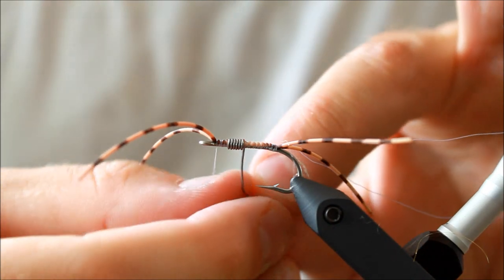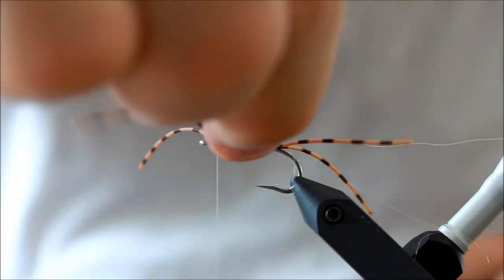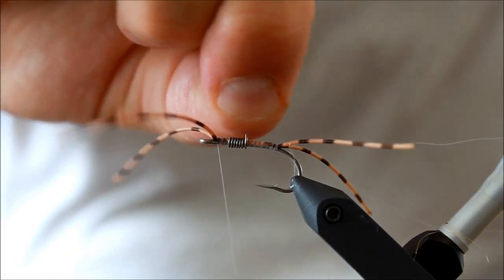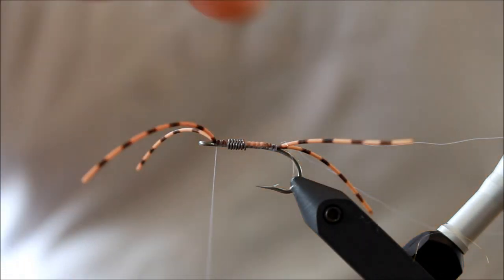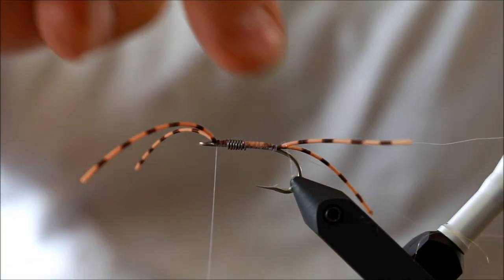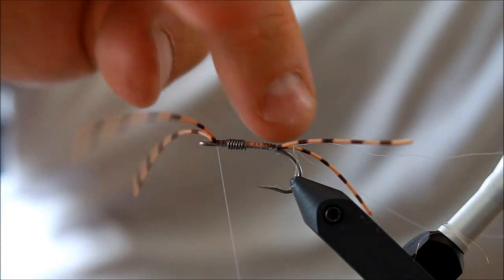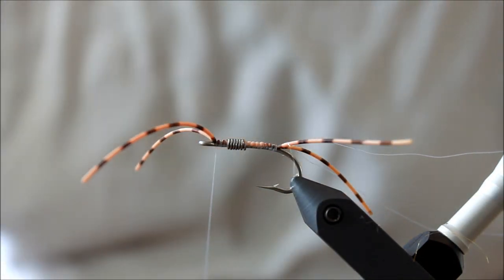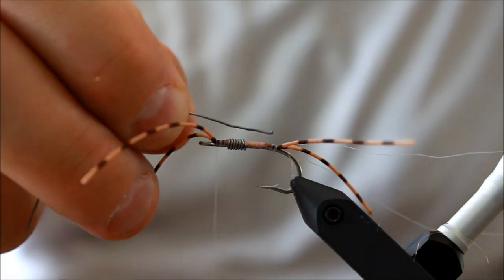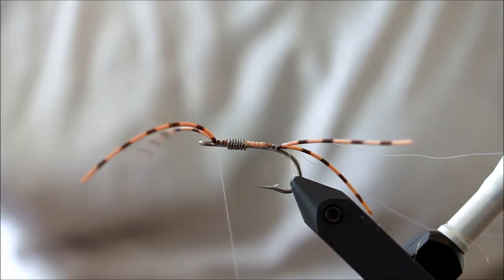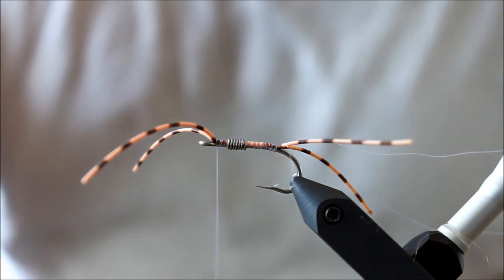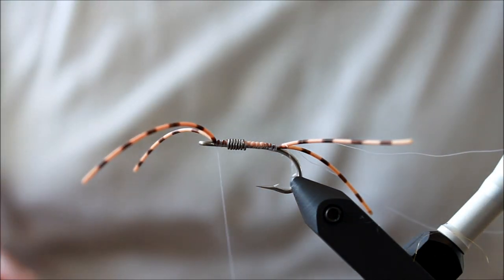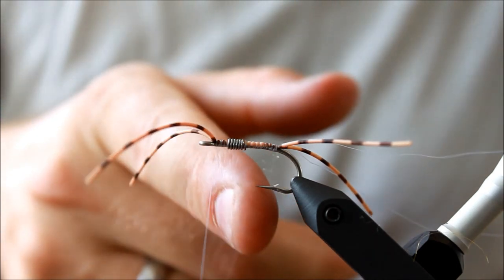If you're using this for bonefish on fairly shallow flats, what you want to do is take your weight and just put it on the top of the fly. Kind of like just tying in a few strands like this on top of the fly, because then the fly will turn over in the water, and as you stop stripping, the fly will sit on the surface of the bottom with the hook pointing upwards.